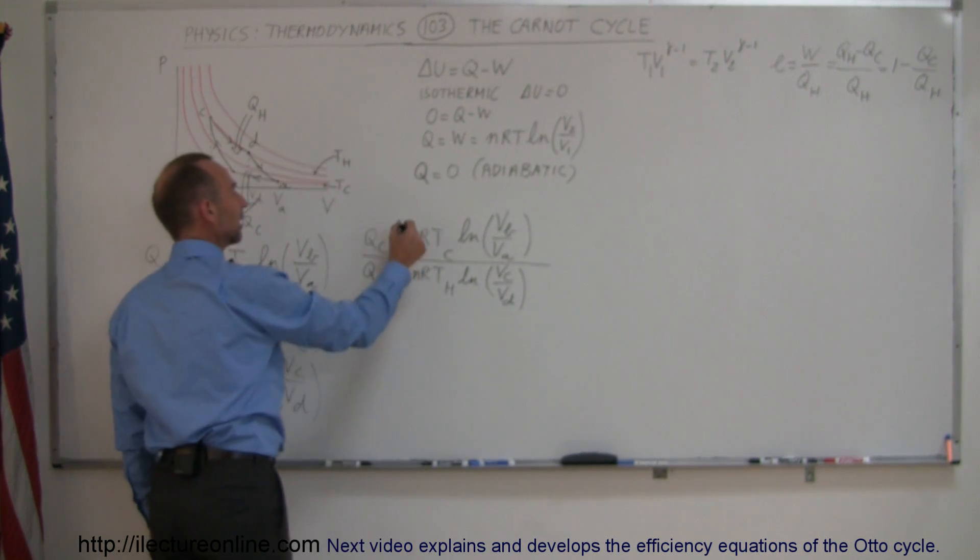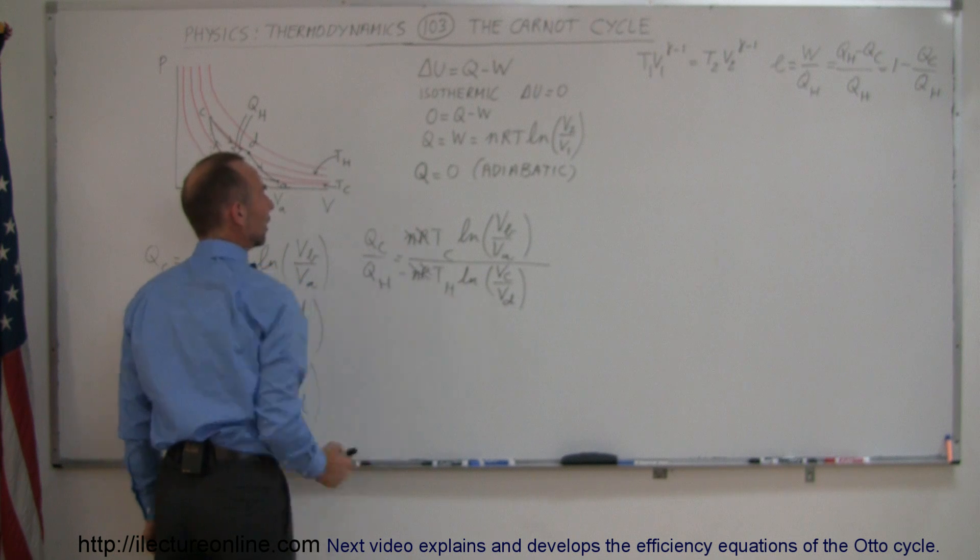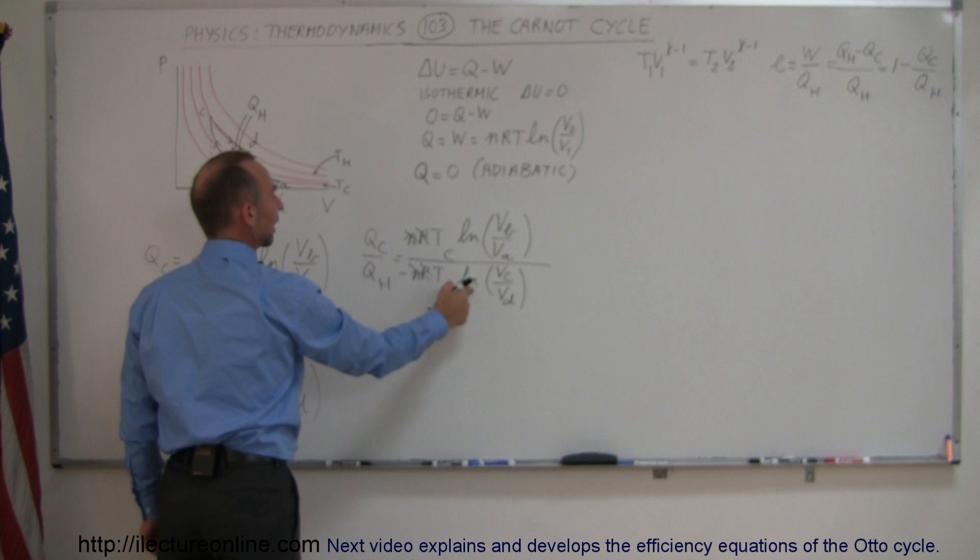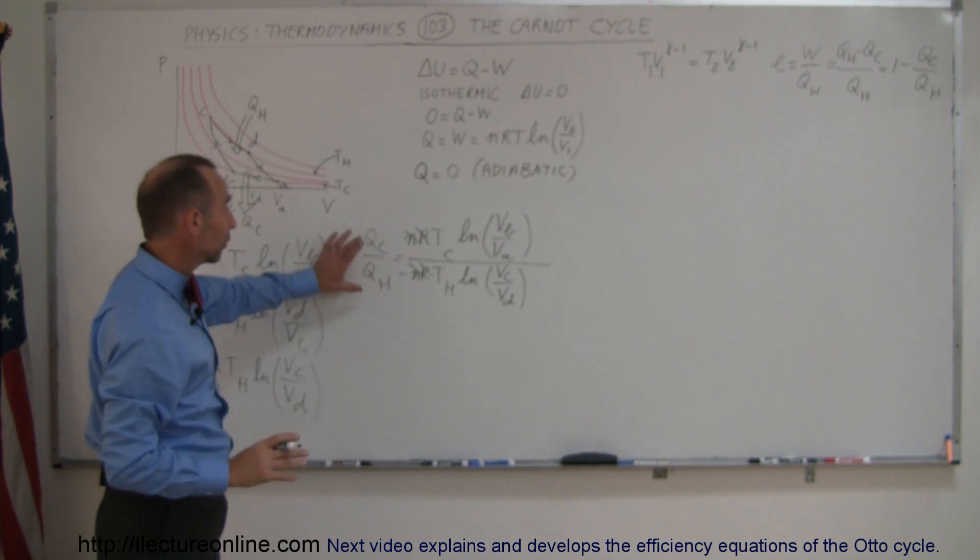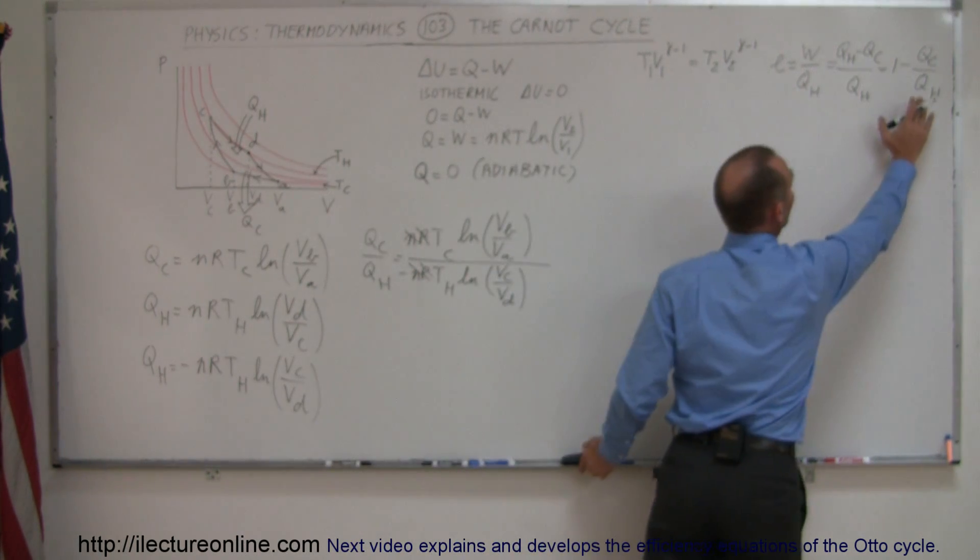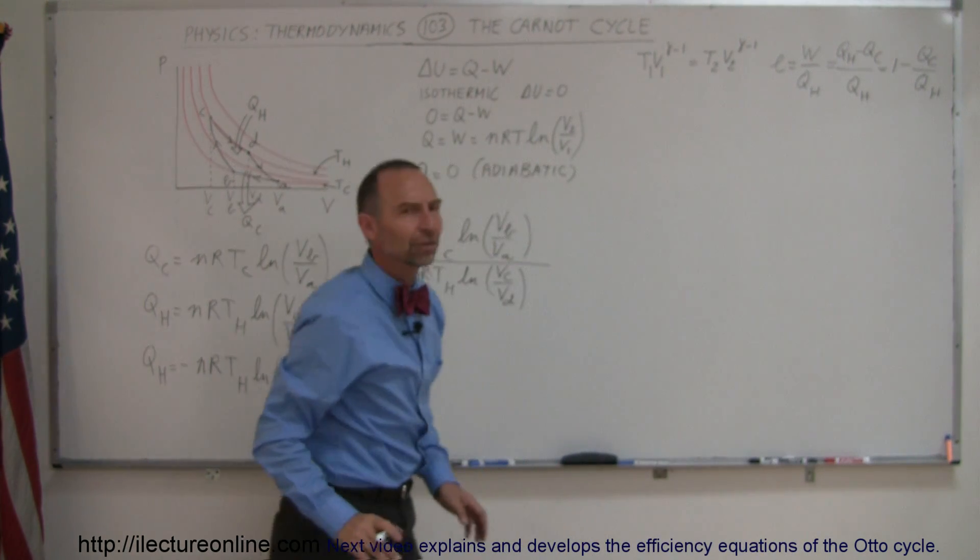And now, right away, you can see that the nR cancel out, and now we have T_C over T_H and the natural log of V_B over V_A times the natural log of V_C over V_D. So that's equal to Q_cold over Q_H, which is the part of our efficiency equation we have over there.